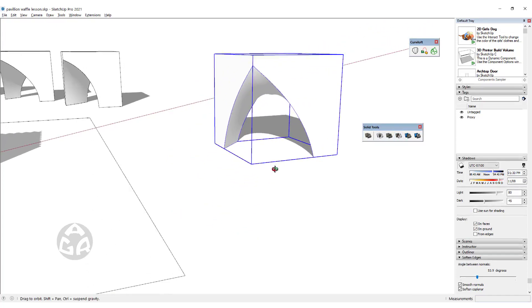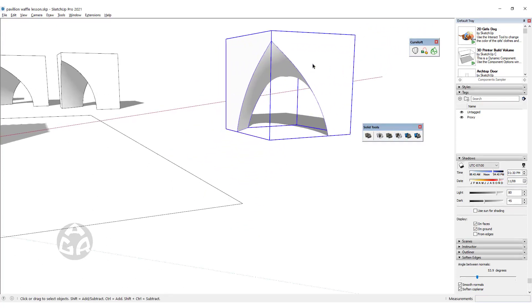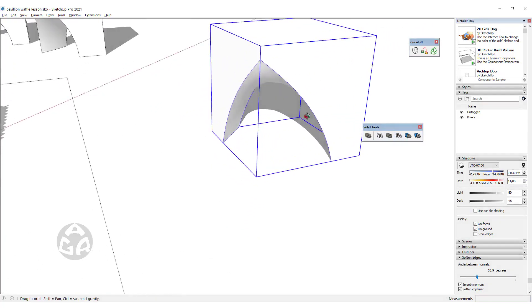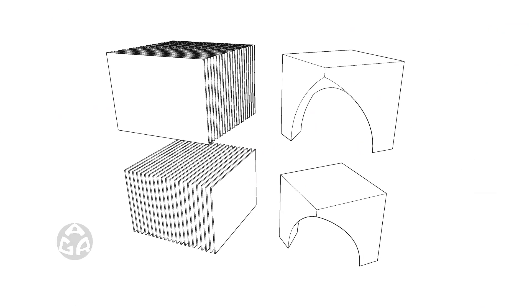Now the shape is ready to turn into a waffle structure. To create the waffle structure, we need two sliced cubes — one along the red axis and one along the green axis — and also two copies of the final shape to intersect with the sliced cubes.